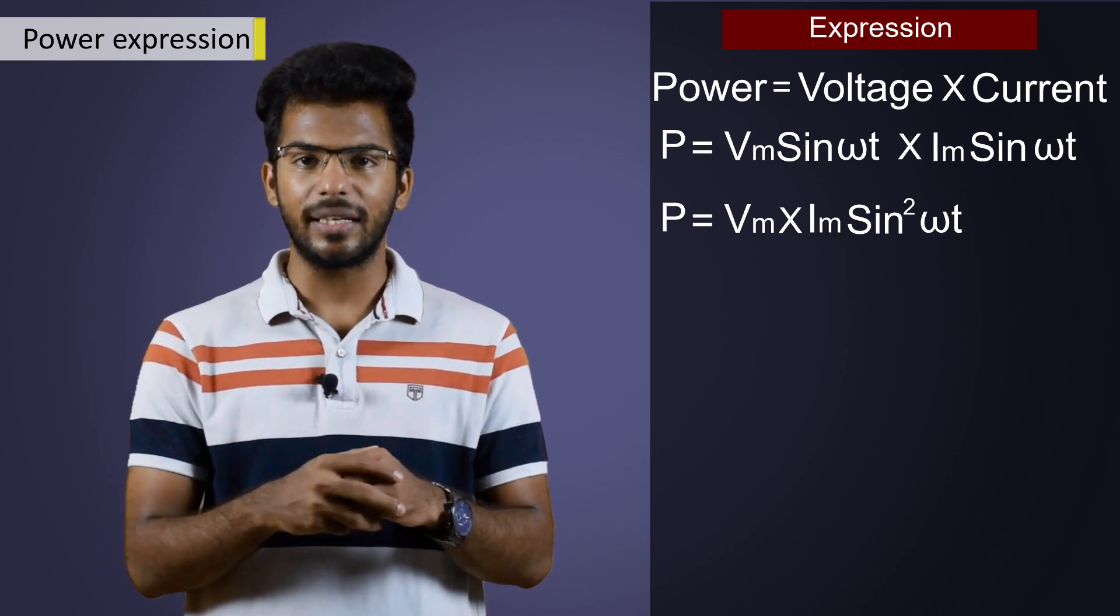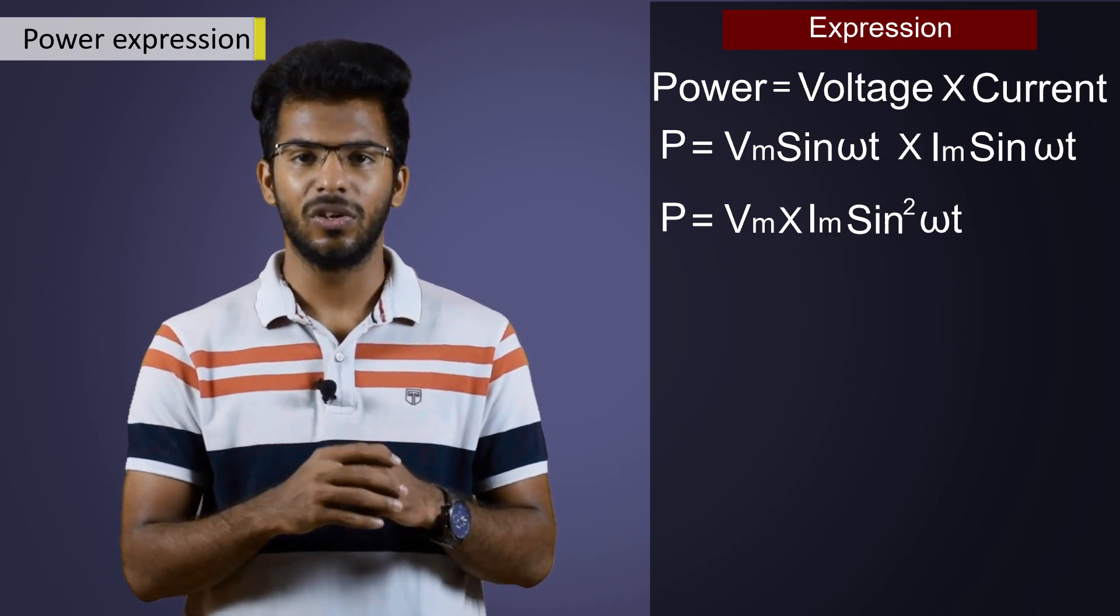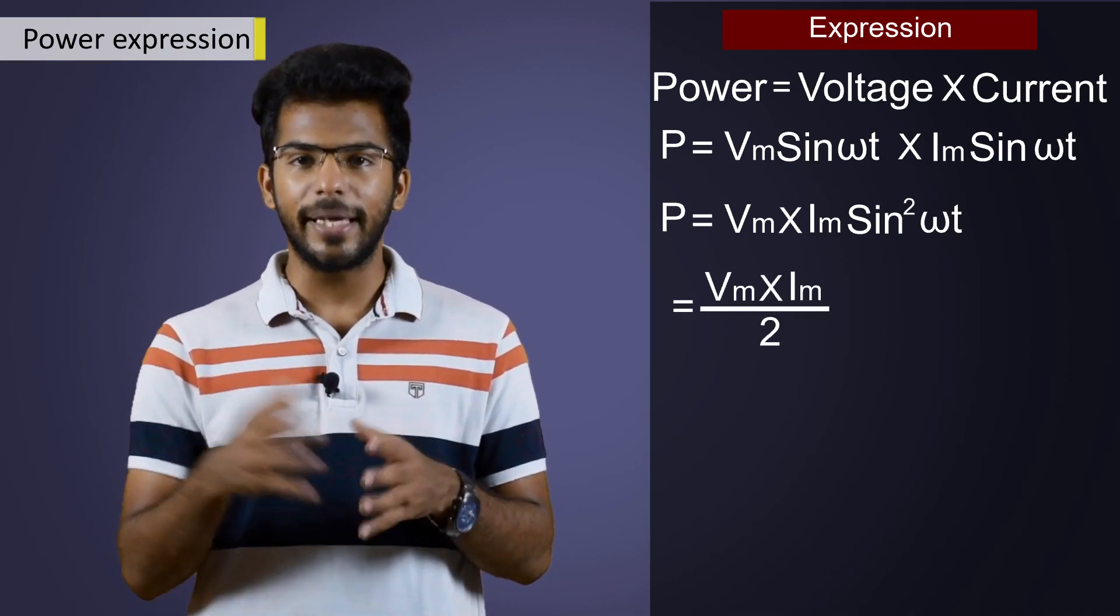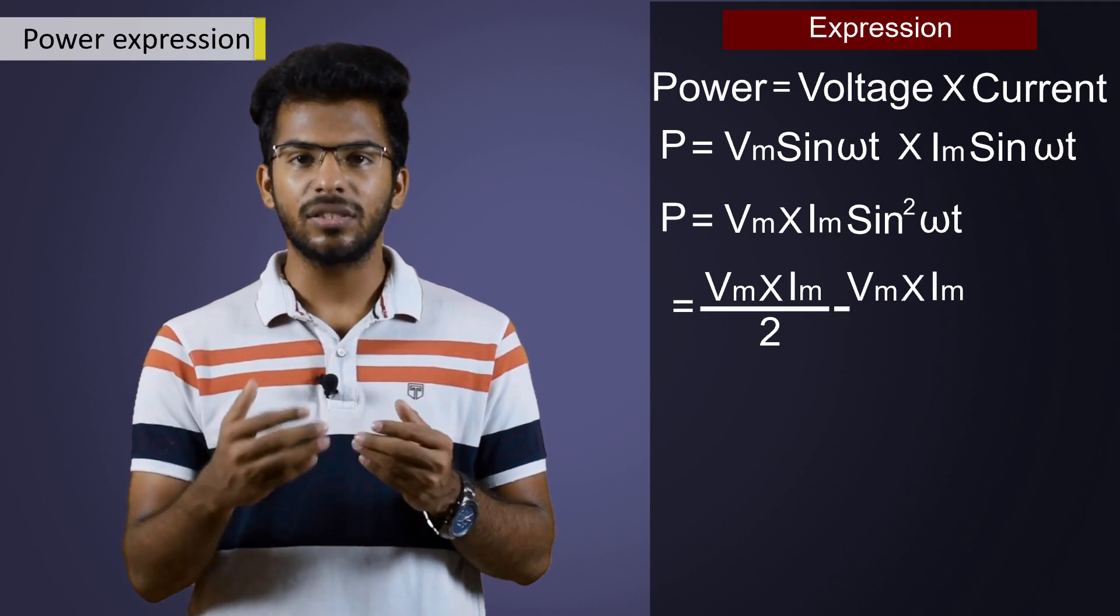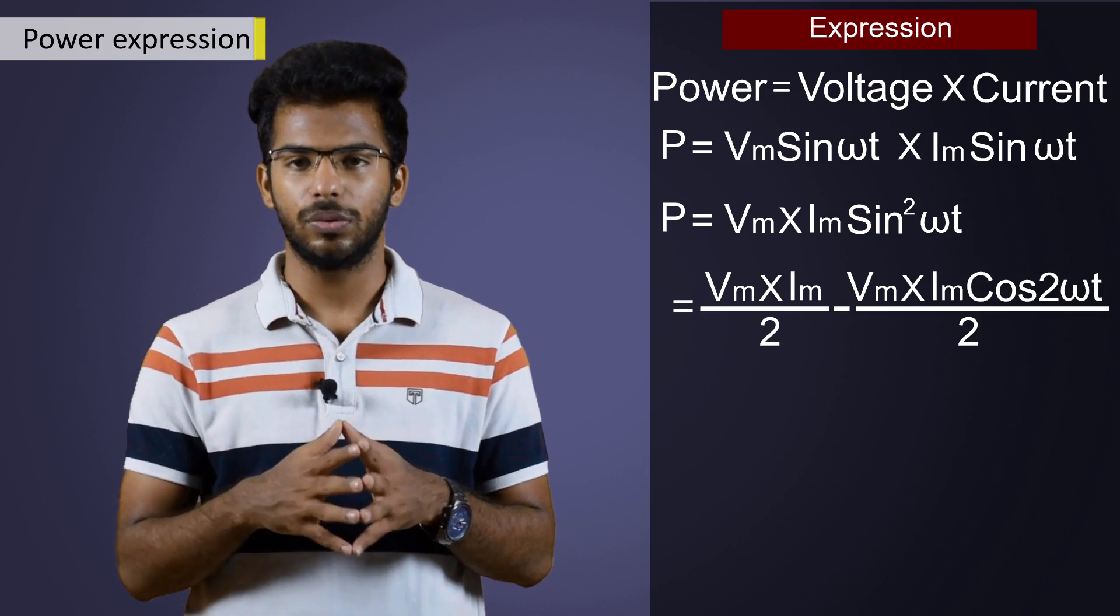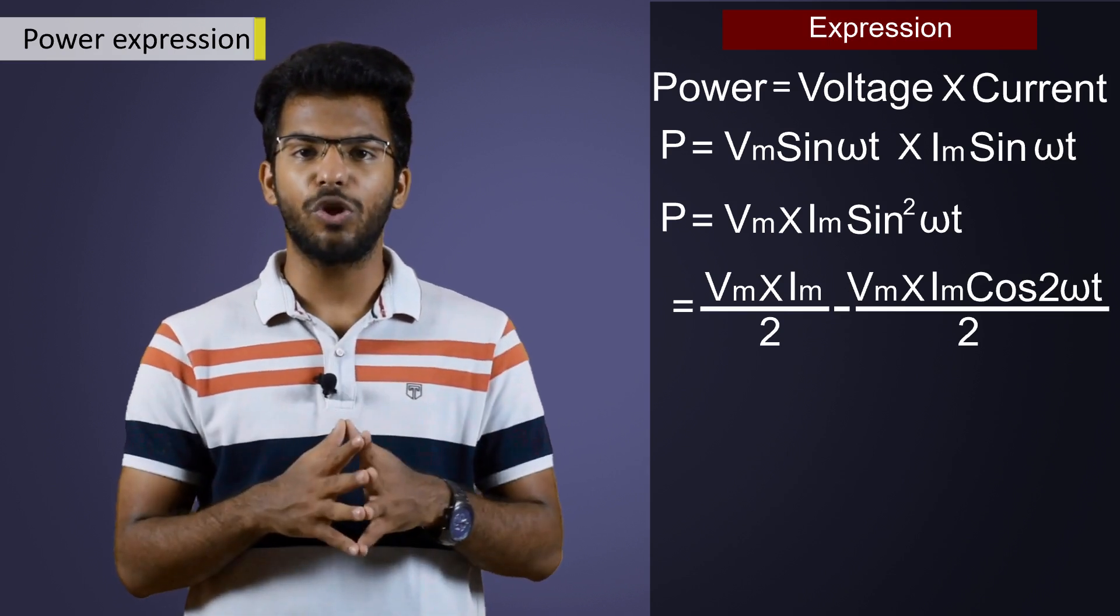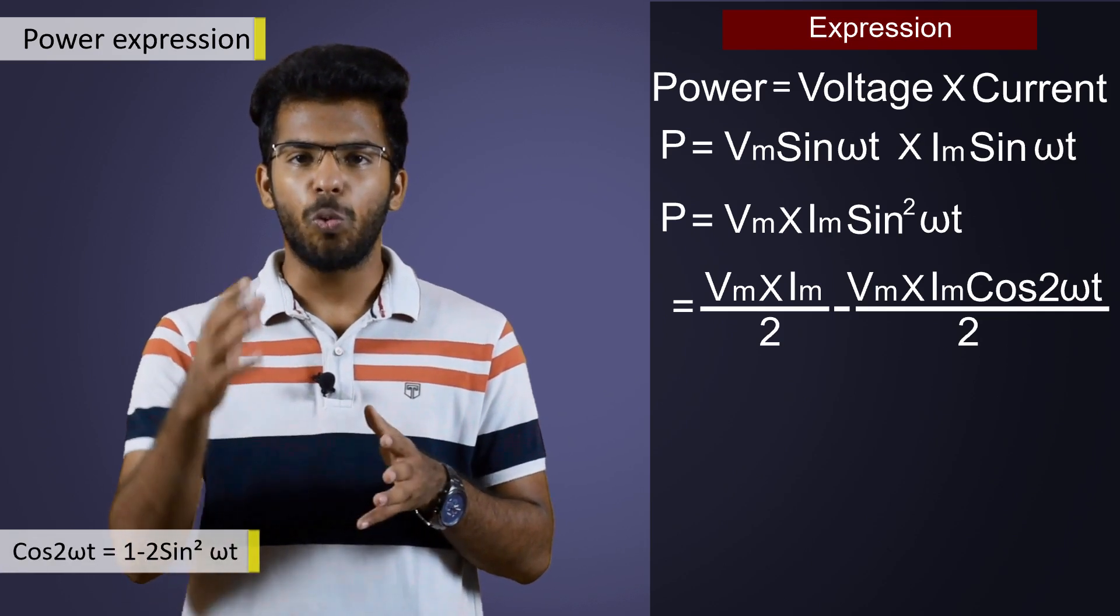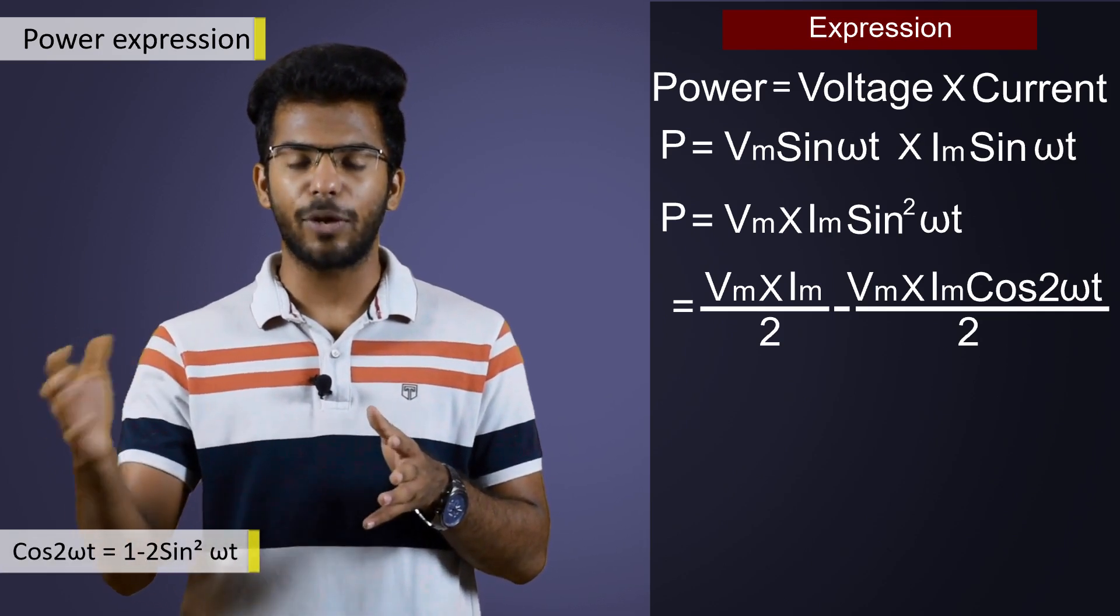This is the instantaneous value of power. When we simplify this expression further, power will be equal to Vm Im by 2 minus Vm Im cos 2 omega t by 2. We make use of trigonometric formula cos 2 omega t is equal to 1 minus 2 sine square omega t.